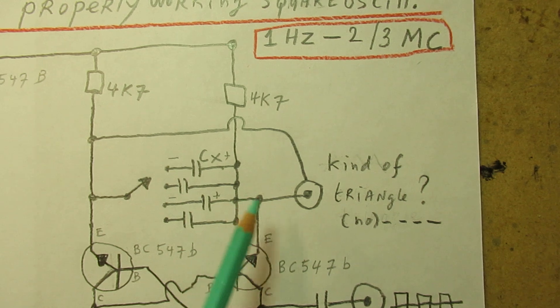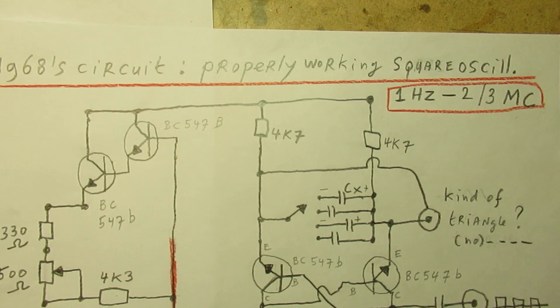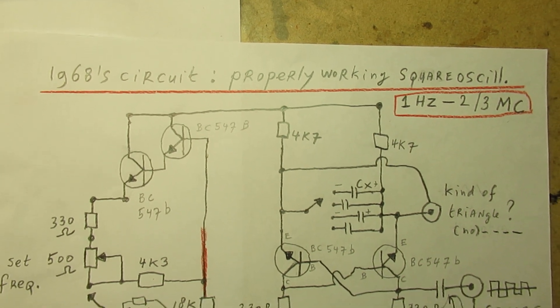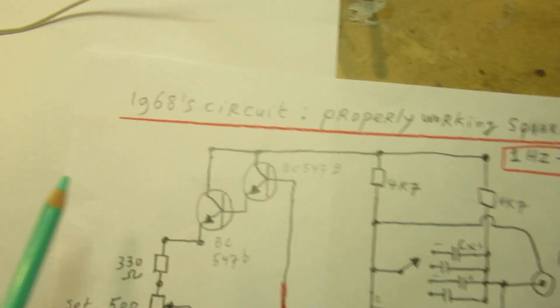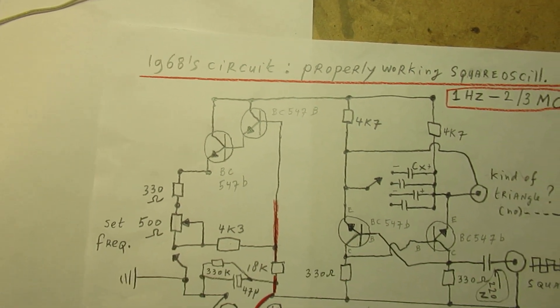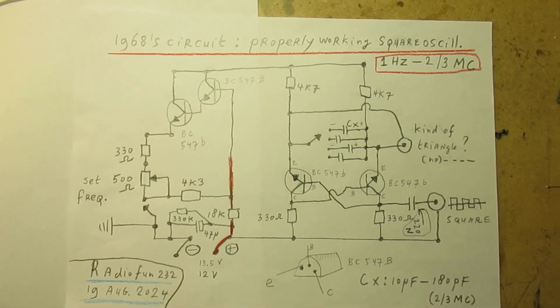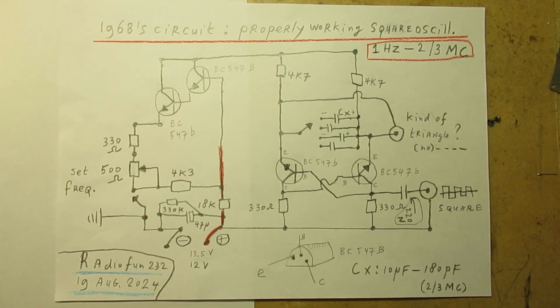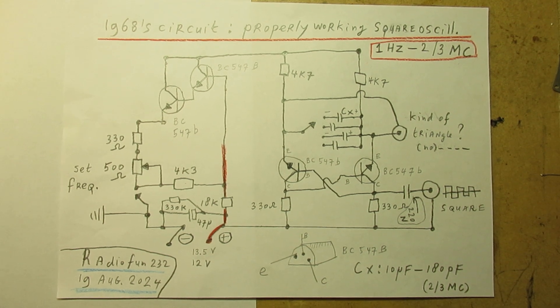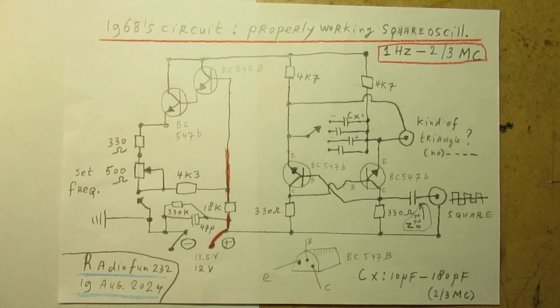It does not give a good triangle wave. Perhaps it has to do with the transistor that I've used now, compared to the transistors that were used in 1968. But anyway, this is the kind of circuit that, as far as I know, always works when made in a proper way.